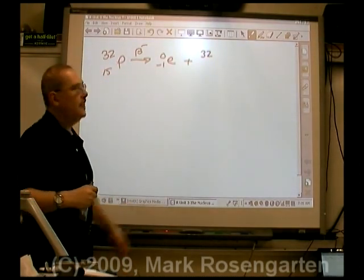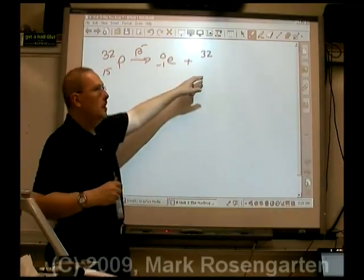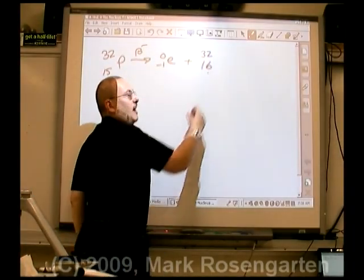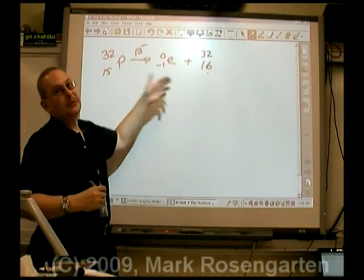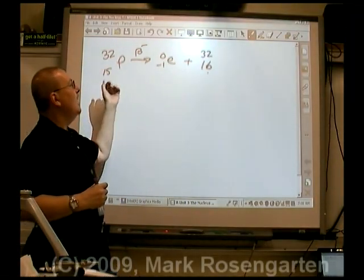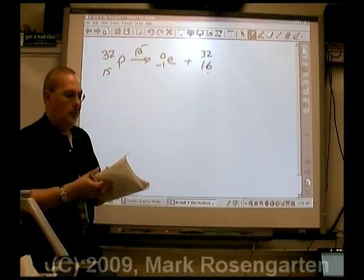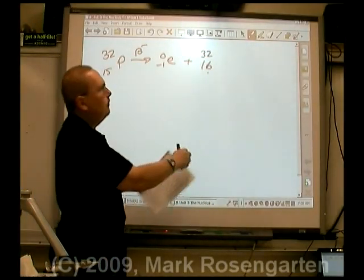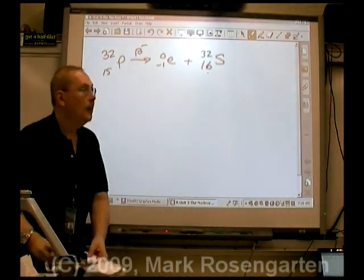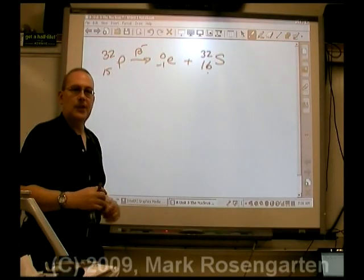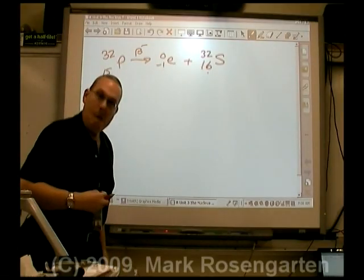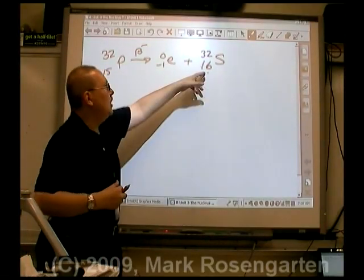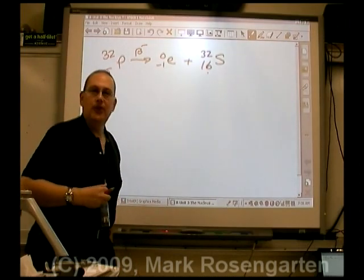The atomic number is 15. 15 equals minus 1 plus what? Well, that's minus 1. Minus 1 and 16 adds up to 15, because we've got 15 on the other side. And element 16, according to the periodic table, element 16 is sulfur. So, what's just happened here is an unstable nucleus of phosphorus spat out a beta particle and changed into an atom of sulfur-32.